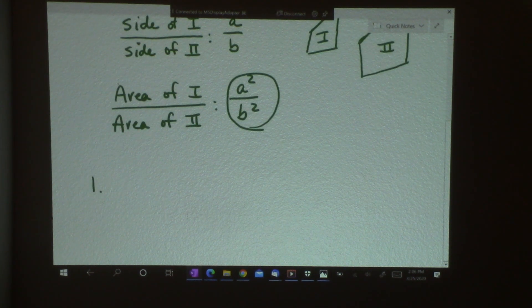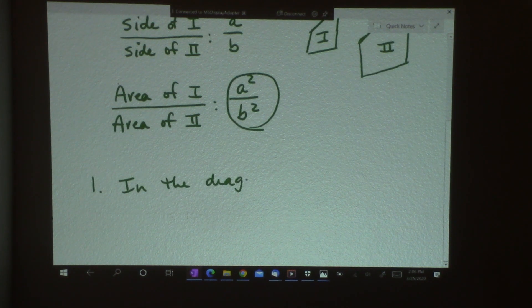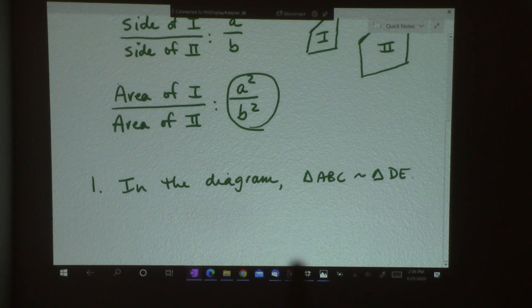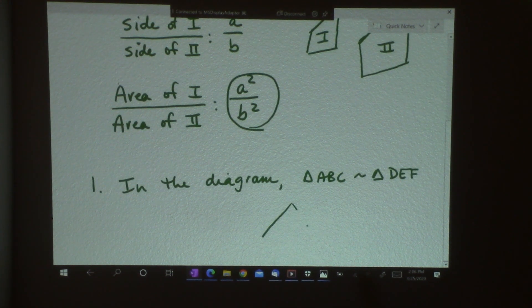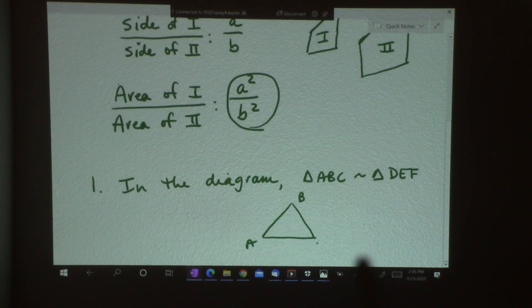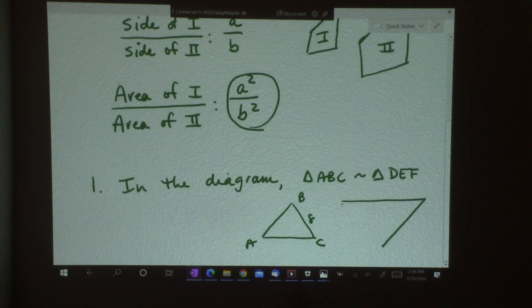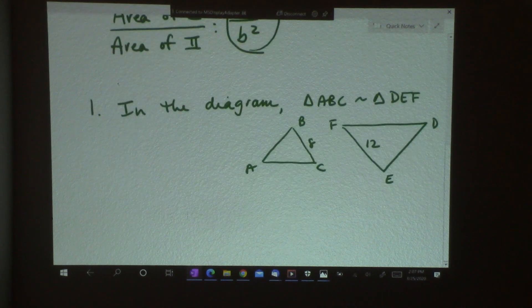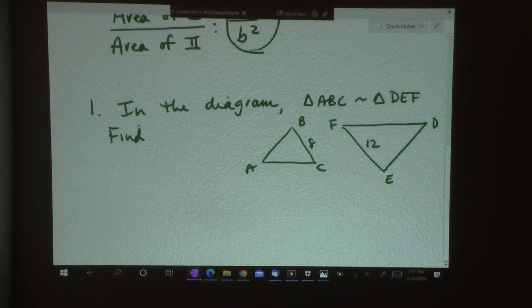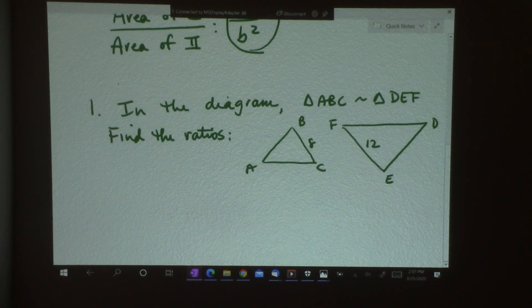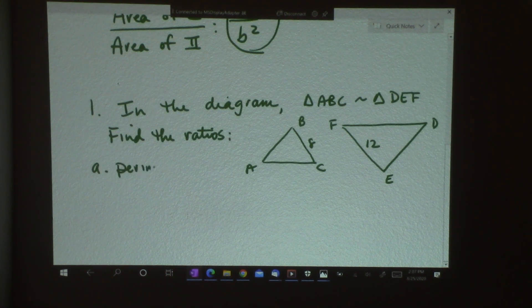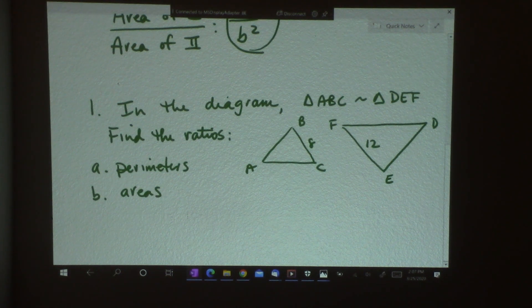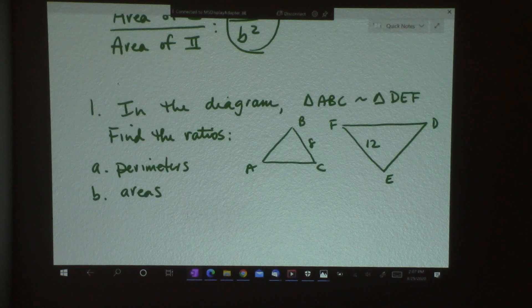Here's number one. In the diagram, Triangle ABC is similar to triangle DEF. So if I have ABC here, and this side is 8, and I've got DEF here, and this side is 12. In the diagram, they're similar. Find the ratios of their perimeters, and the ratios of the areas. So go ahead and write that down. Finish that.